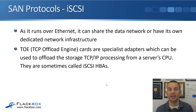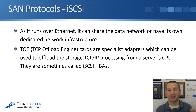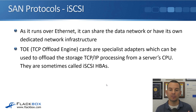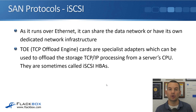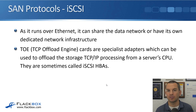As iSCSI runs over Ethernet rather than Fibre Channel, it can share the data network or have its own dedicated network infrastructure. A TOE card — TCP Offload Engine — is a specialist adapter which can be used to offload the storage TCP/IP processing from a server's CPU, improving performance. These are sometimes called iSCSI HBAs: normal Ethernet network cards optimized for iSCSI traffic.